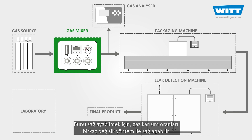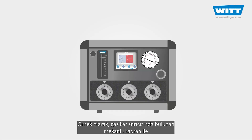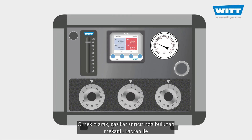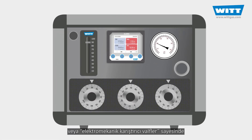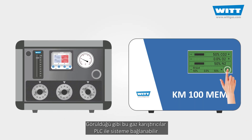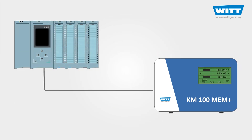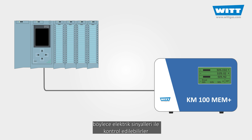To achieve the desired mixture, we can adjust the gas mix percentage using different methods. For example, using mechanical dials on the mixer, or using electromechanical mixing valves. These types of mixers can be connected to a programmable logic controller, or PLC, so they can be controlled via electrical signals.